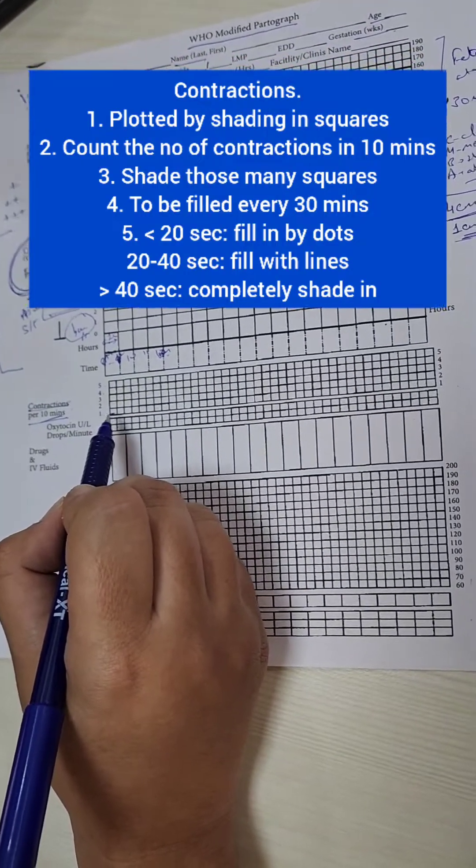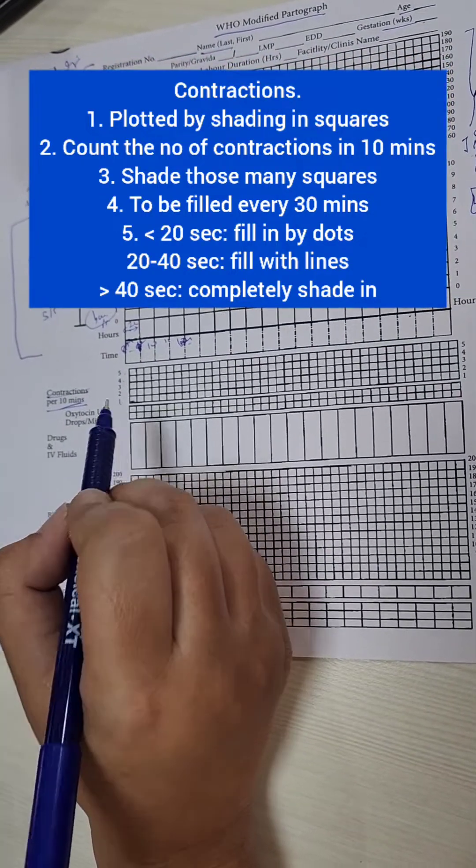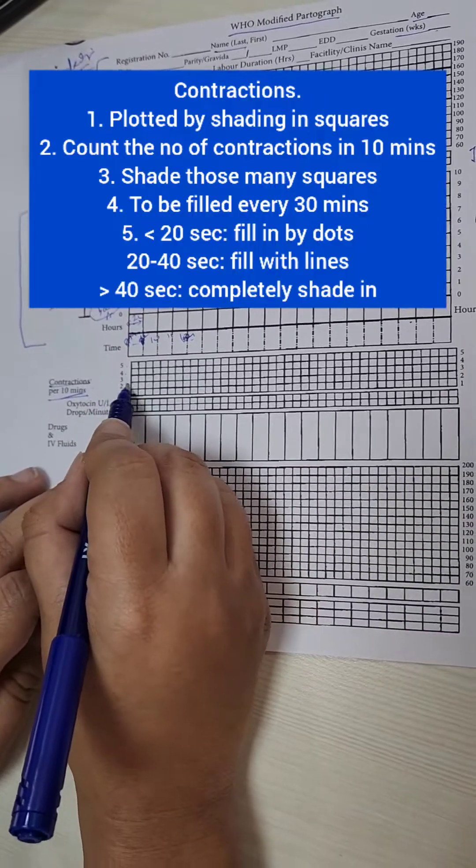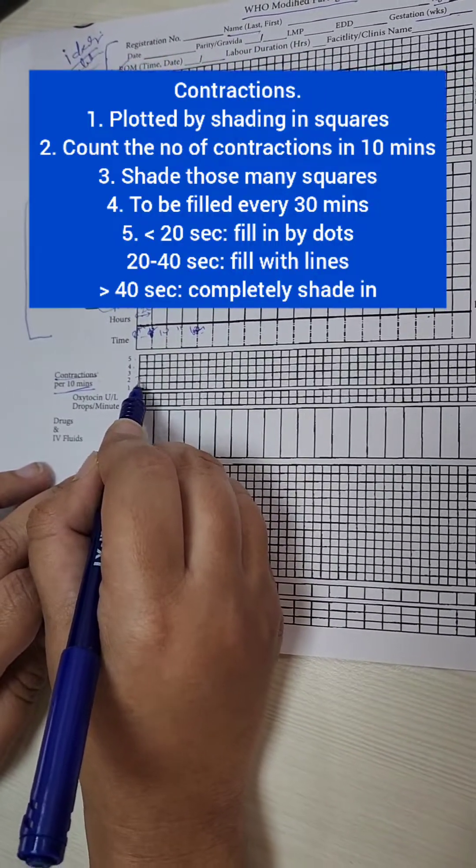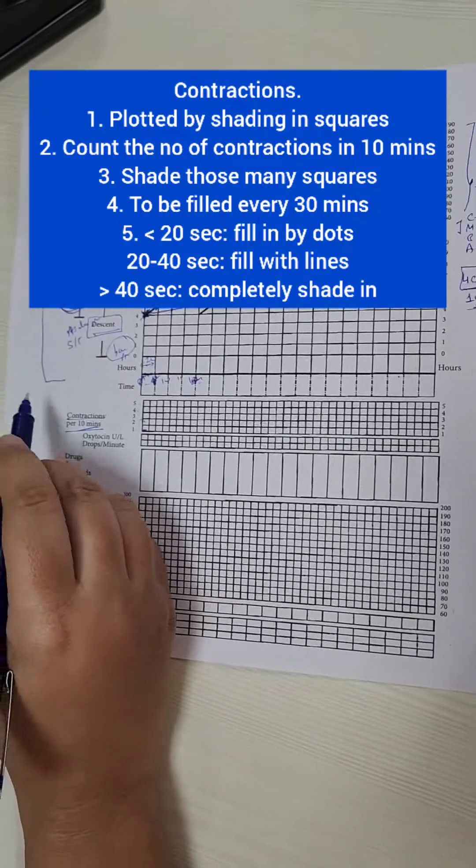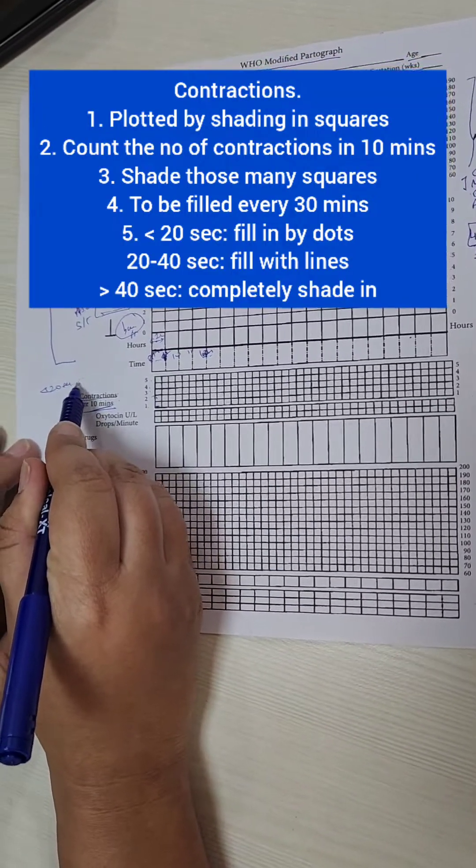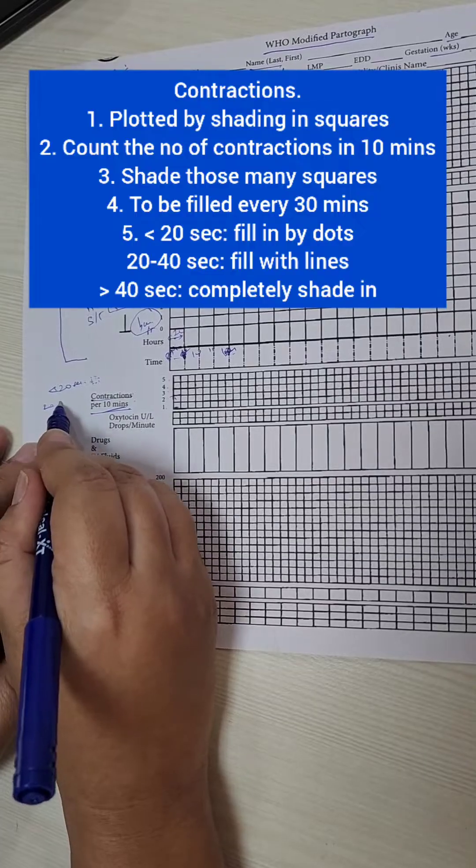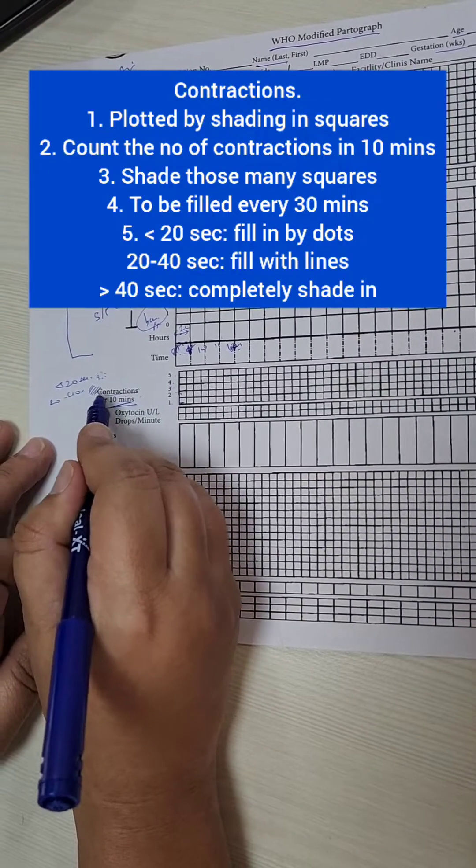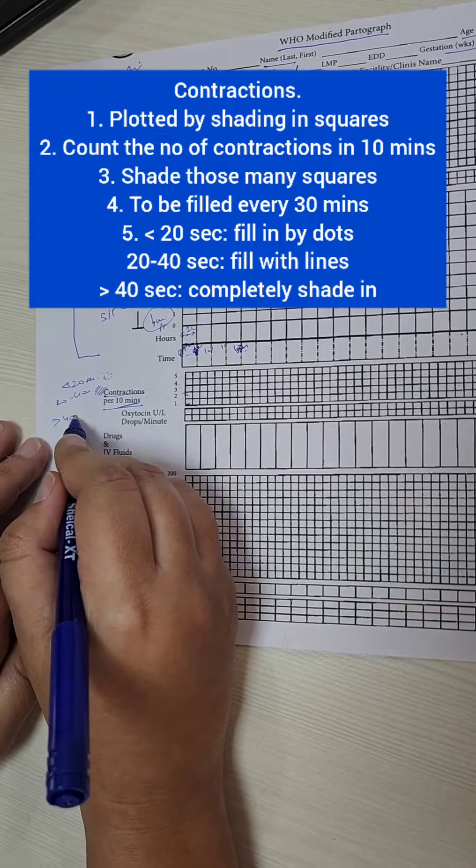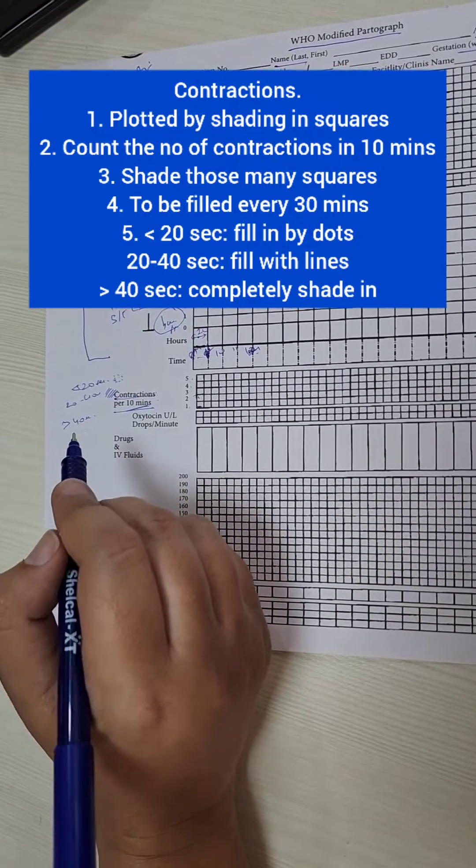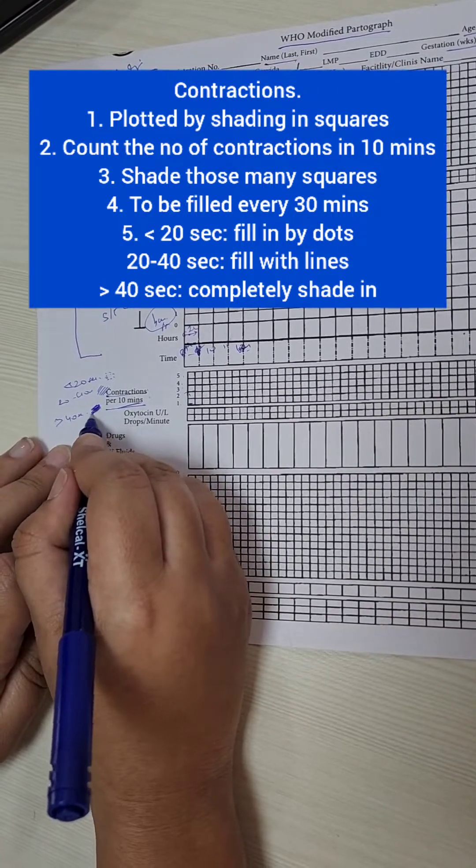So if the woman has, say she comes to us and she is having 2 contractions in a 10 minute period, we have to shade in 2 boxes. And how do we shade in? Depending on the intensity. So if the contraction is less than 20 seconds, we put dots. If it is between 20 to 40 seconds, we put shaded diagonal lines like this. And if it is more than 40 seconds, that means it is a good contraction, we completely shade in the box.